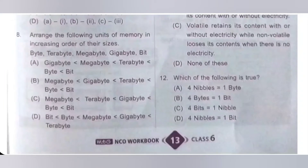Eighth question. Arrange the following units of memory in increasing order of their sizes: byte, terabyte, megabyte, gigabyte, and bit. Bit is the smallest unit of memory and terabyte is the largest. So the order is: bit, then byte, then megabyte, then gigabyte, then terabyte. Option D is the correct answer.